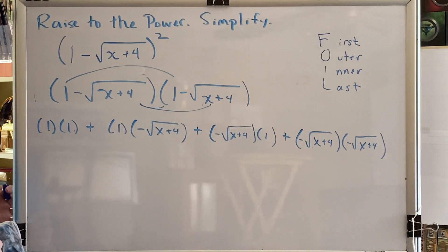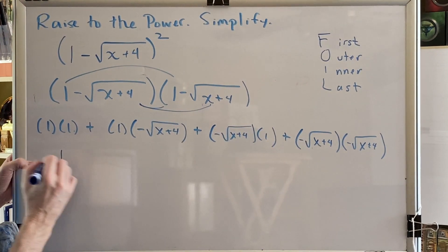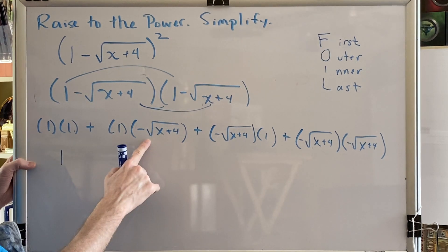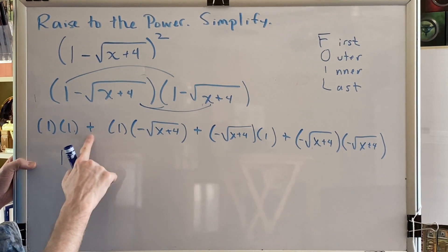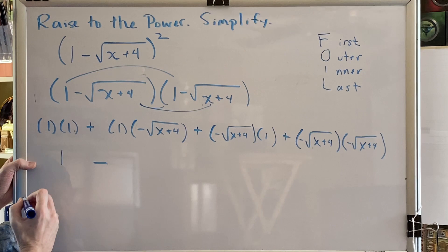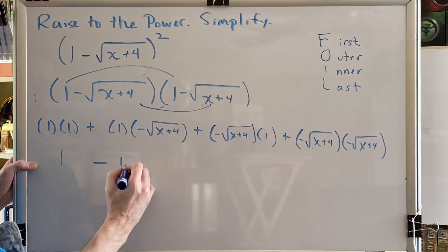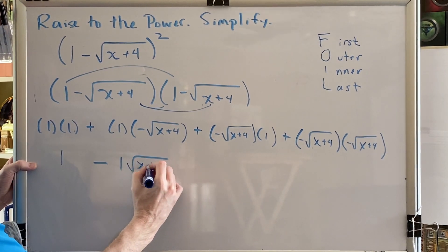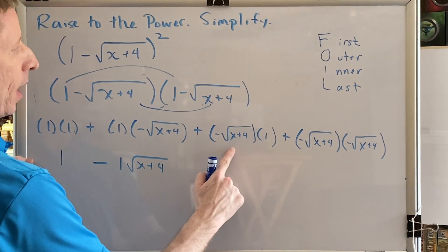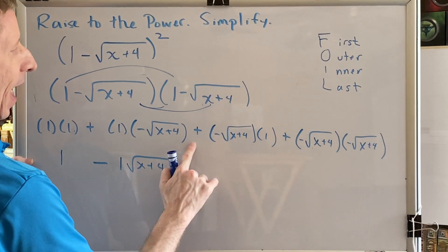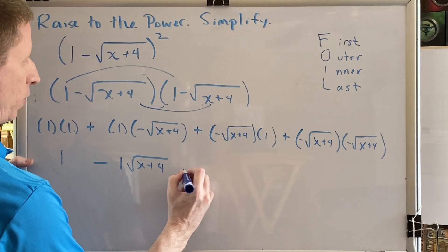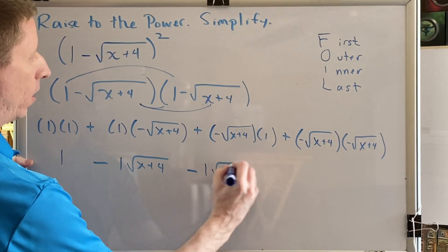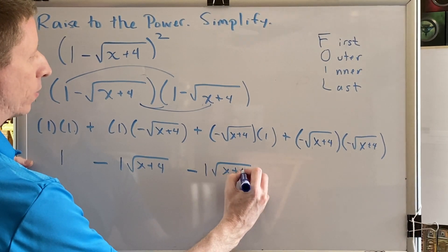Now I will begin to simplify. 1 times 1 is 1. A positive times a negative is a negative. And when you add a negative, you are subtracted. So this is subtract 1 square root of x plus 4. Similarly, a positive times a negative is a negative. And adding a negative is subtraction. So this becomes minus 1 square root of x plus 4.